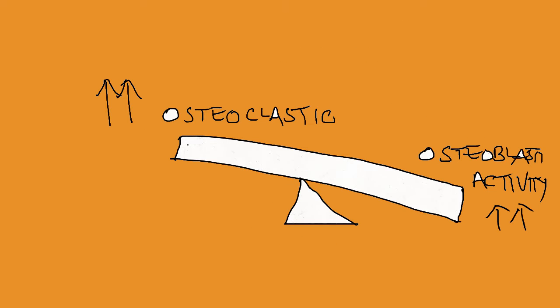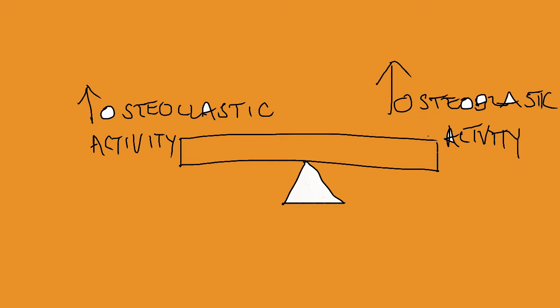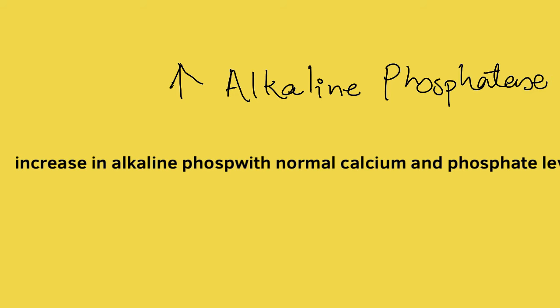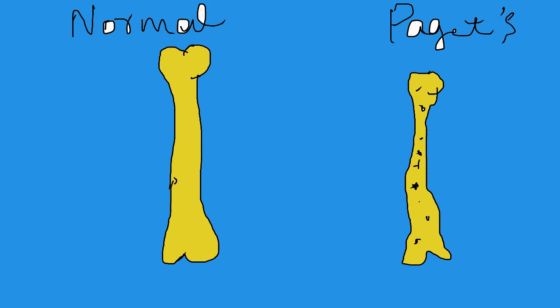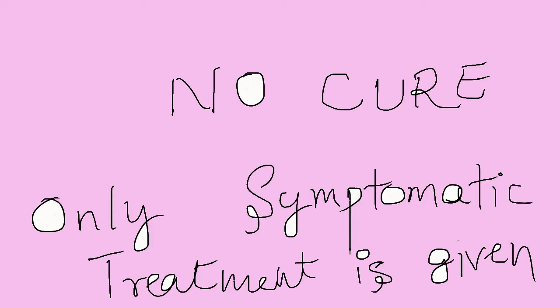Paget's disease actually has an imbalance between osteoclastic and osteoblastic activity of the bone. Osteoclastic activity is required for bone resorption and osteoblastic activity is required for bone formation. So when osteoclastic activity increases in the bone for an unknown reason in Paget's disease, osteoblastic activity also increases.